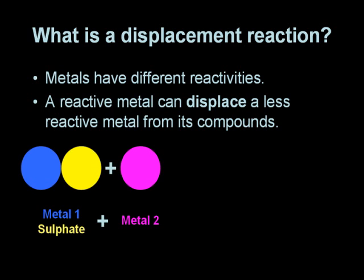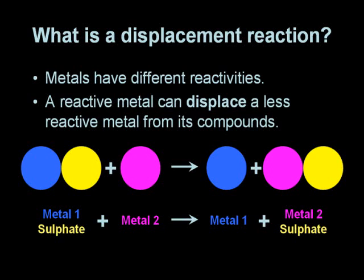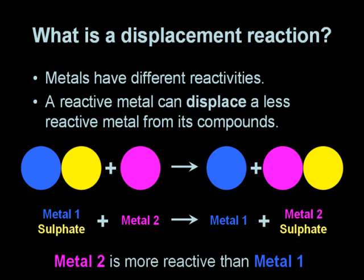So if we consider a reaction between metal 1 sulphate and metal 2, we can see that we form metal 1 and metal 2 sulphate. A change has occurred, a reaction has taken place, and metal 2 has displaced metal 1 from its compound. This is why metal 1 ends up as the free metal on the right hand side of the equation. This tells us that metal 2 is more reactive than metal 1.